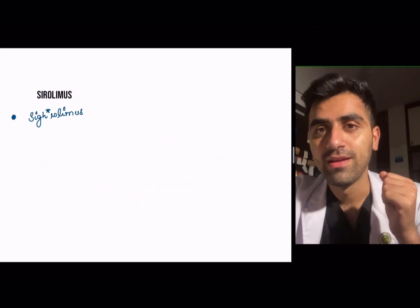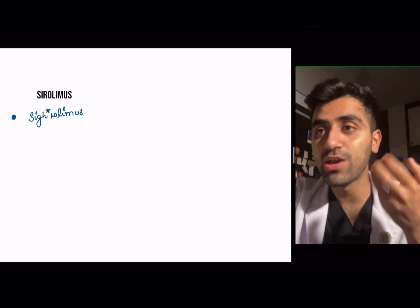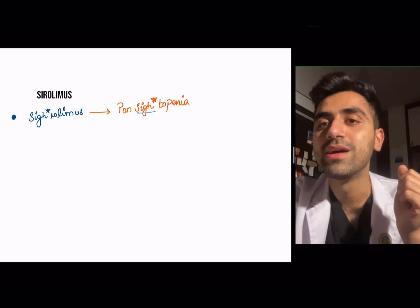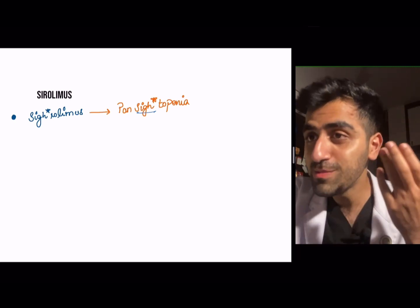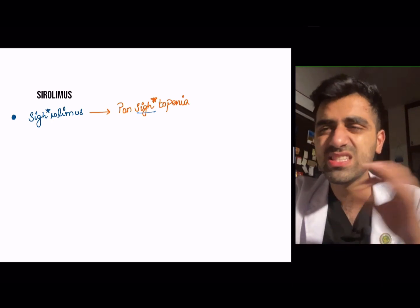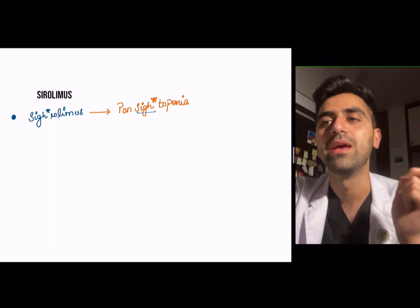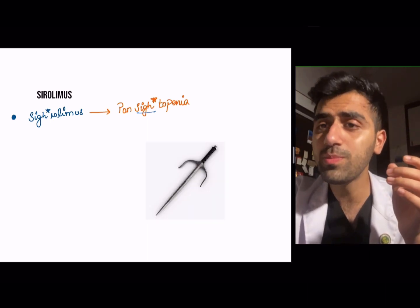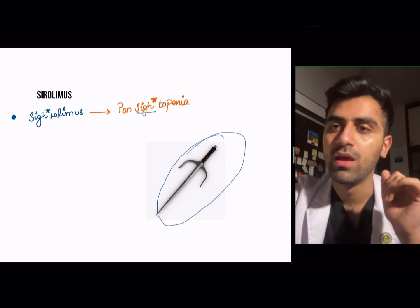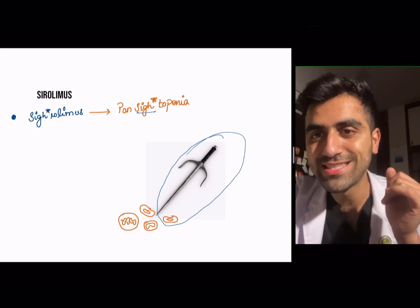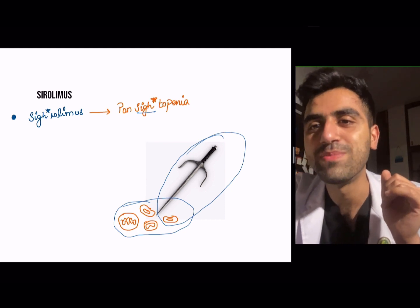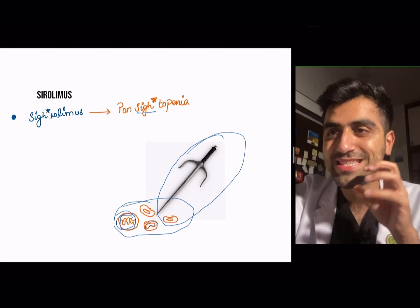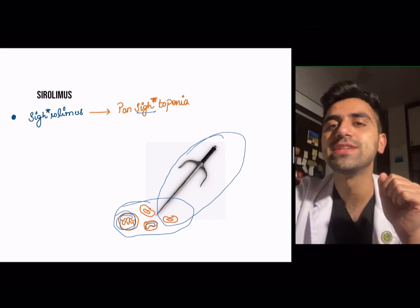For sirolimus side effects: take a deep breath — 'cy...cy...sirolimus' — to remember pancytopenia. You can also picture the Greek letter psi (ψ) stabbing red blood cells, white blood cells, and eosinophils — the psi is causing cytopenia. Sirolimus causes pancytopenia. It also causes hyperlipidemia and hyperglycemia.